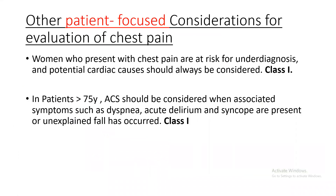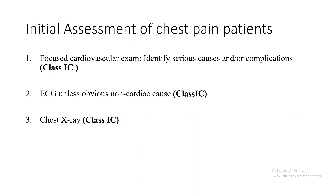Women are at risk for underdiagnosis, and potential cardiology should always be suspected even if the presentation is not really typical. For the elderly, associated symptoms like dyspnea, delirium, or syncope may be the initial presentation of an acute coronary syndrome. We have to do a focused cardiovascular examination. ECG is a class one indication unless there is a very obvious non-cardiac cause, and chest X-ray helps in exclusion of other causes.